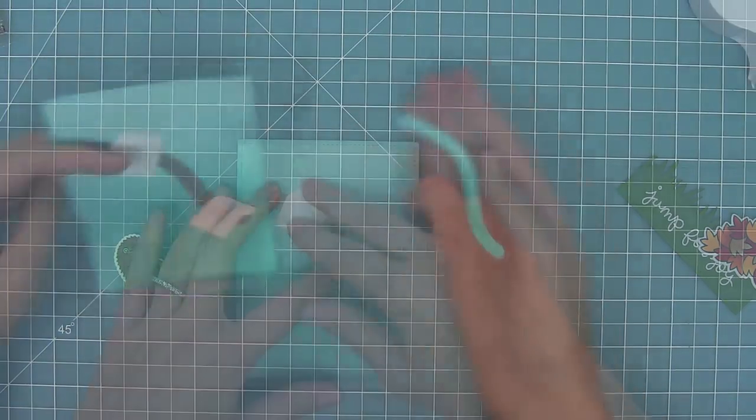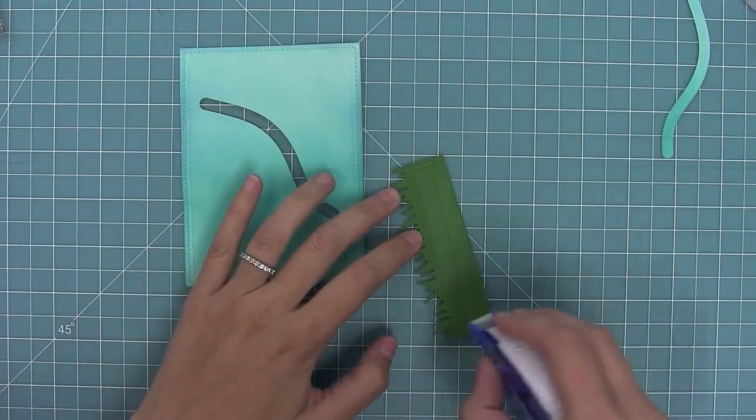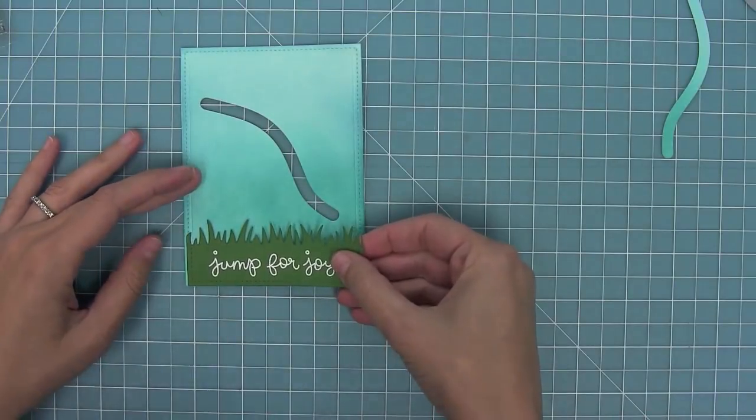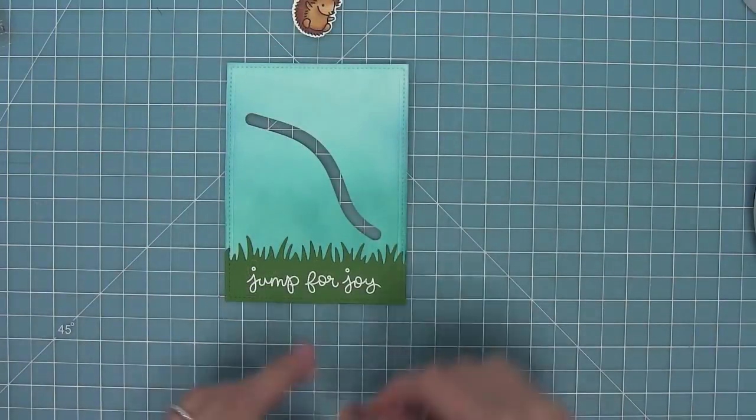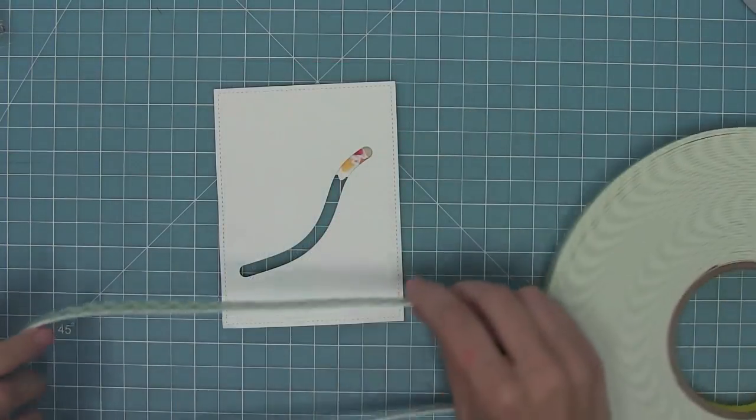Once I have that track all die cut, I can start adhering all the pieces of my card. I'm going to take that grass layer and add that on the bottom, and then with just some tape runner add my fall leaf right to the bottom of that track.